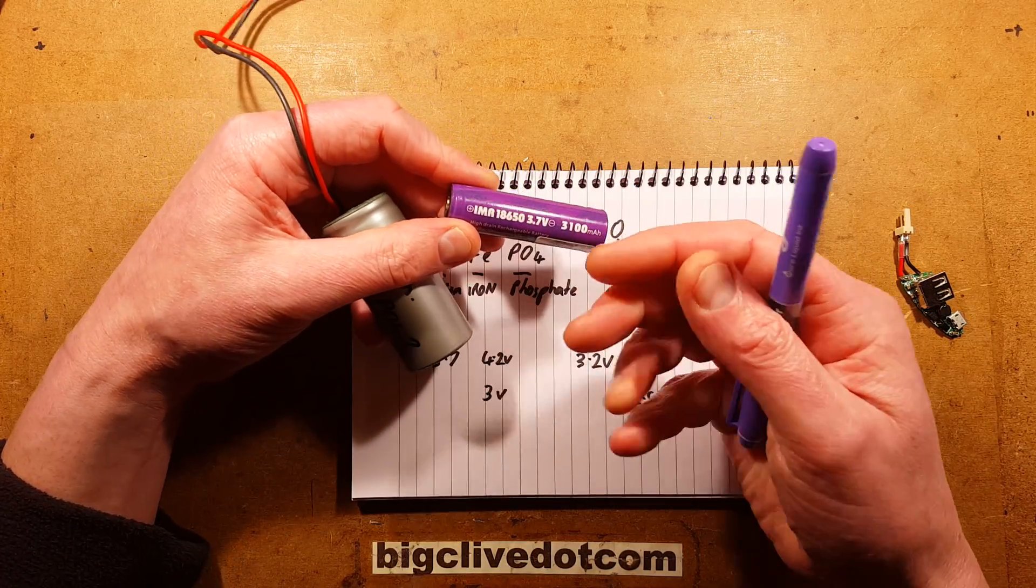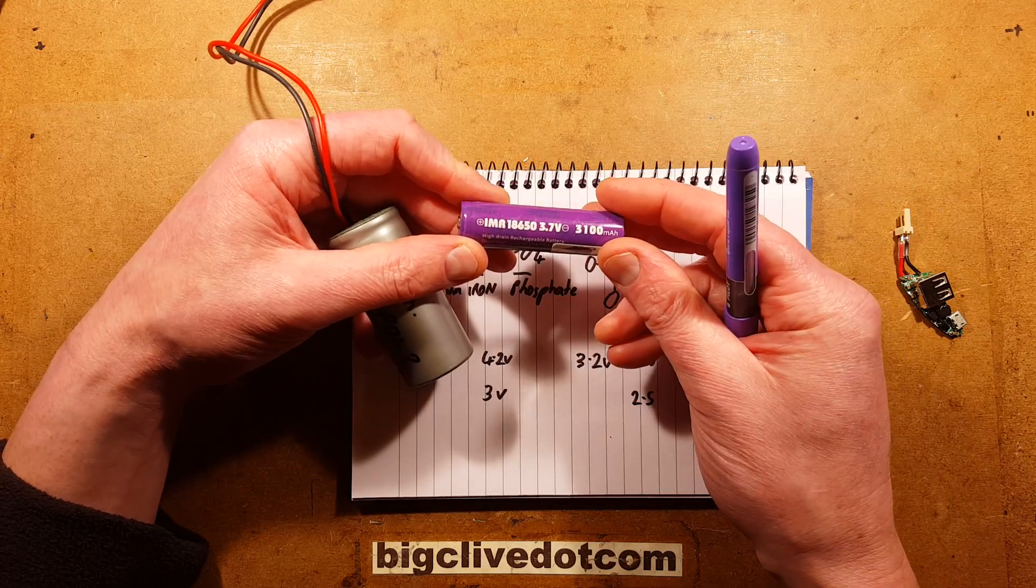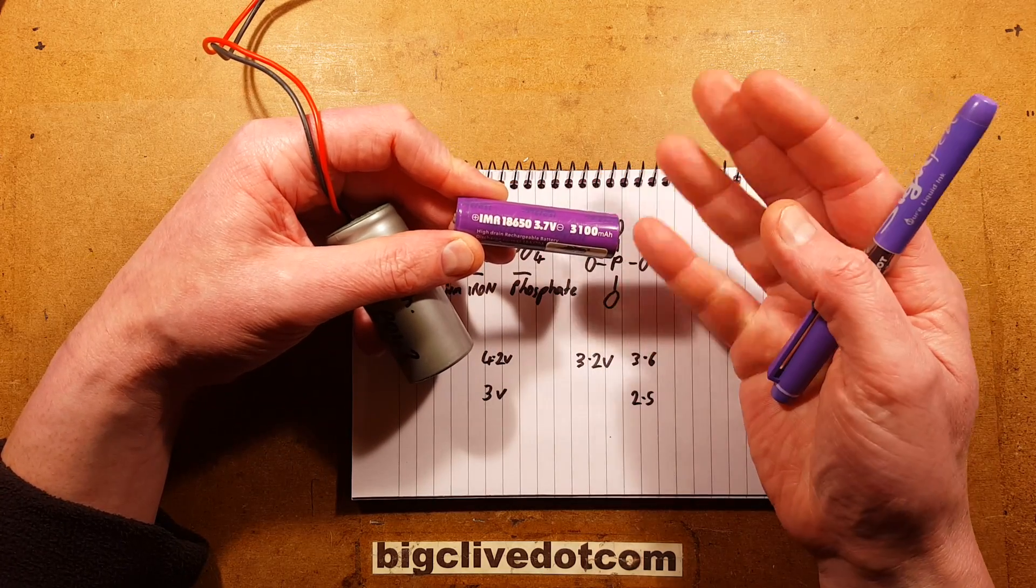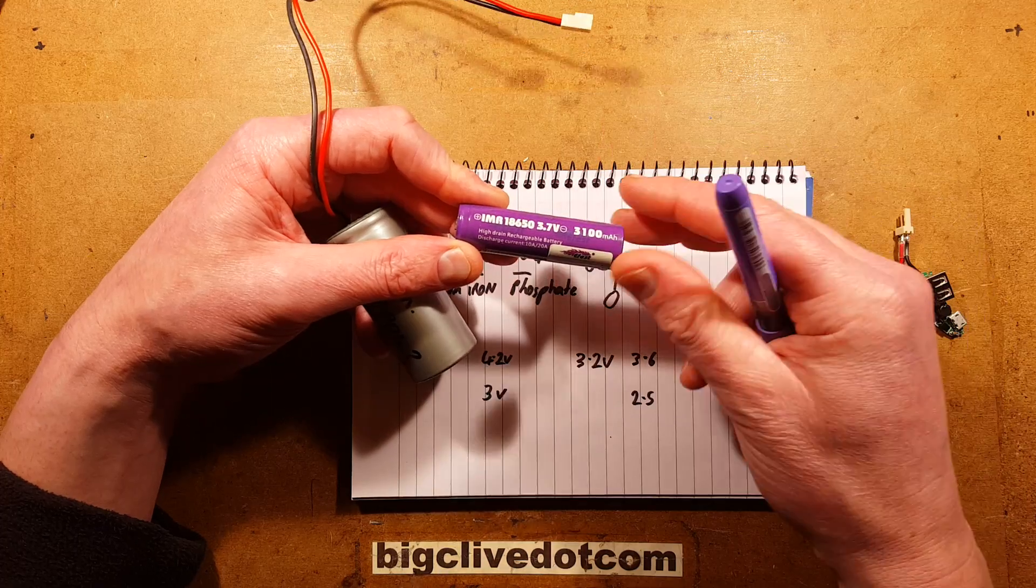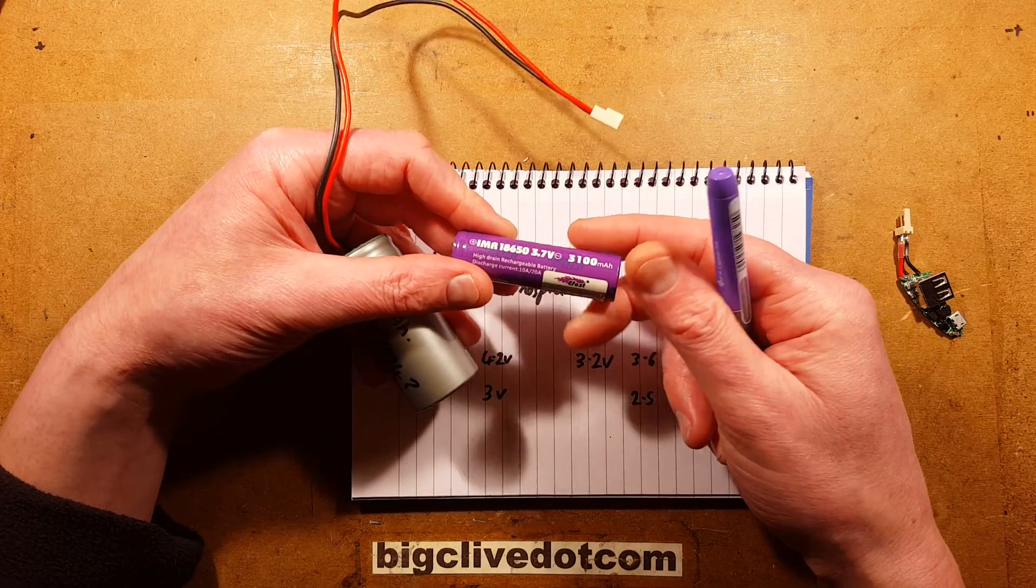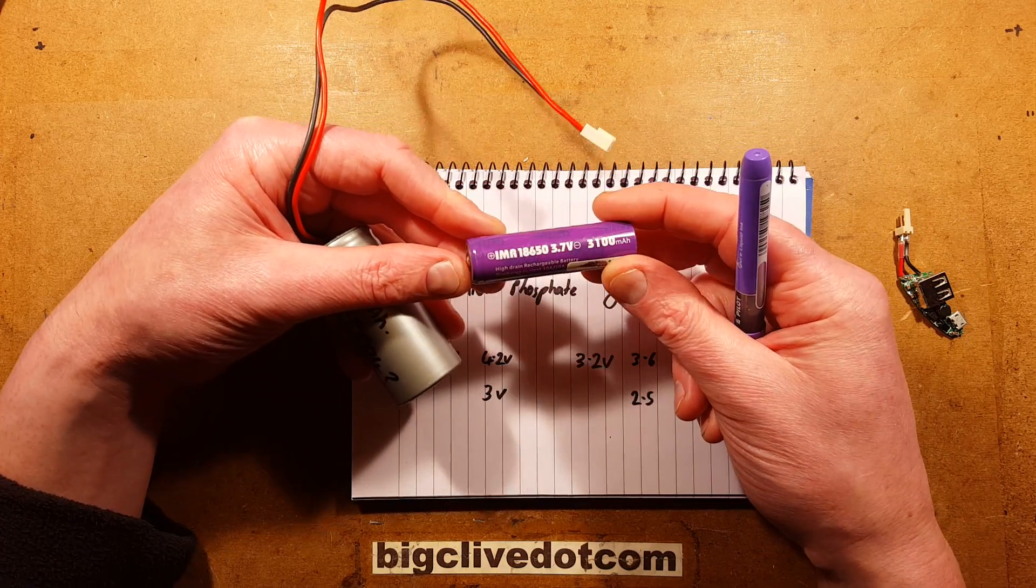This standard lithium cell is quite an aggressive lithium technology inside. And it's rated for about a thousand charge-discharge cycles before it starts reducing. And if you've got a mobile phone and you've had it for quite a while, you'll notice the capacity gradually reduces.